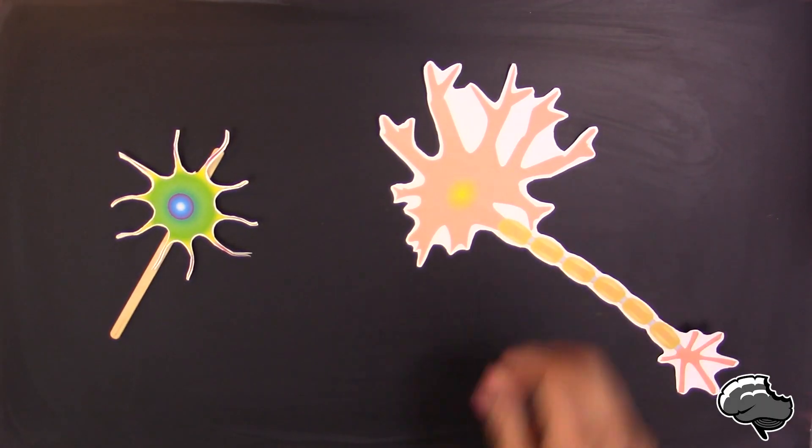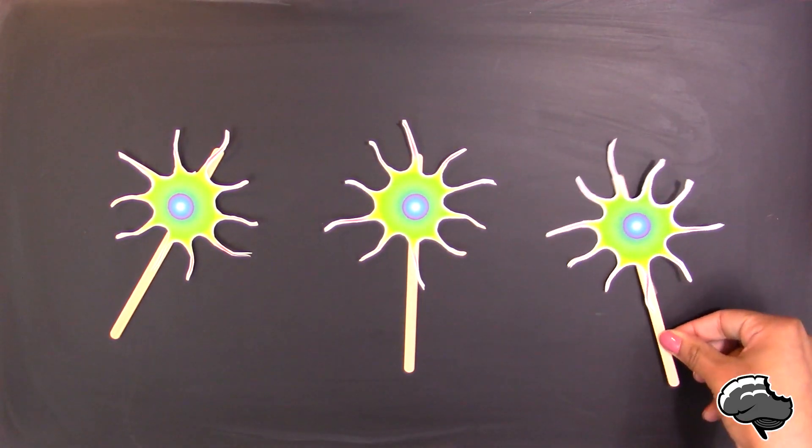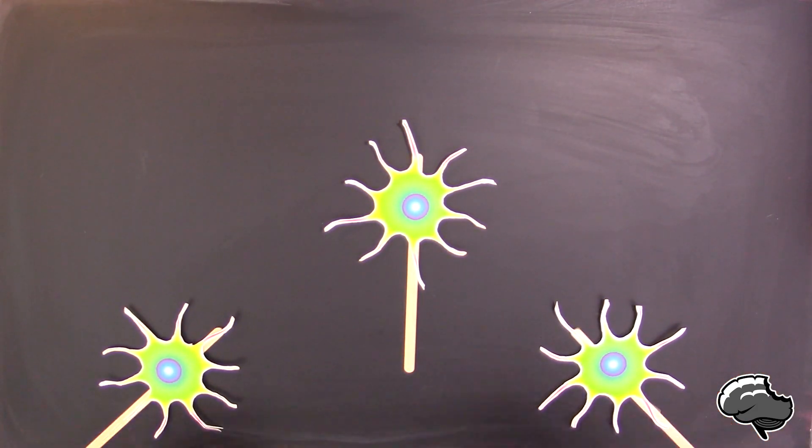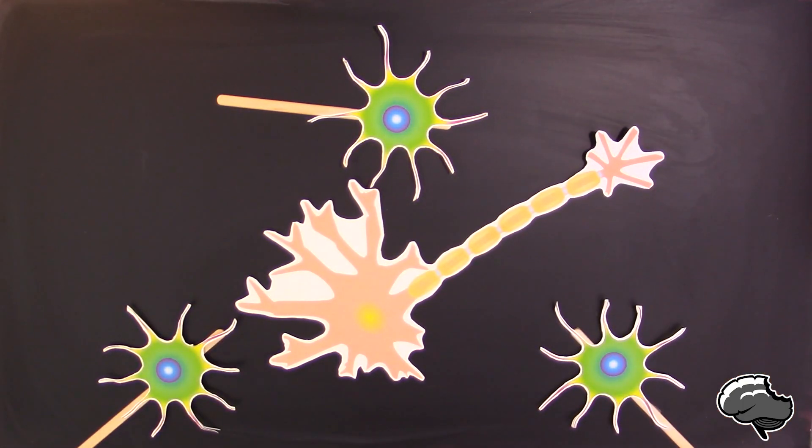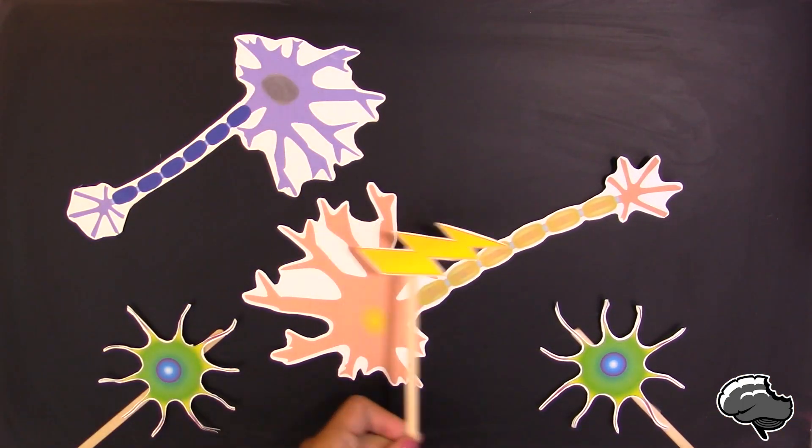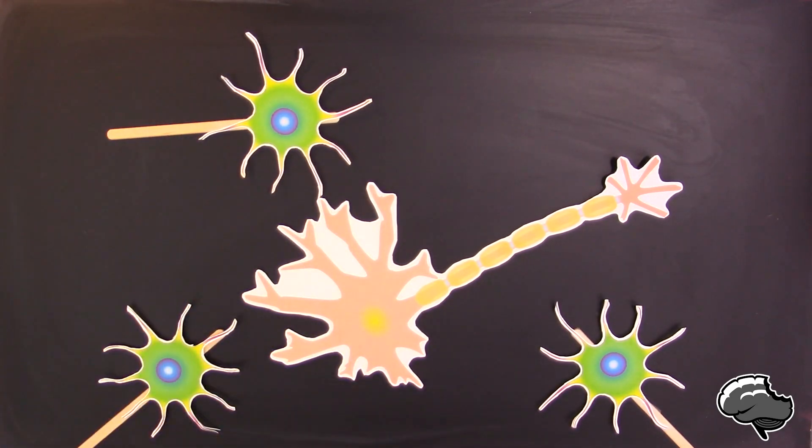Our brain consists of two types of cells. The majority of those cells are glial cells, and they are primarily responsible for insulating and nourishing our second cell type, neurons. Neurons are the communicator cells, while glial cells are the supporting cells.